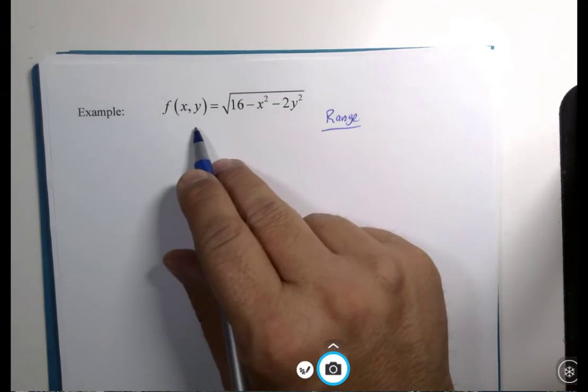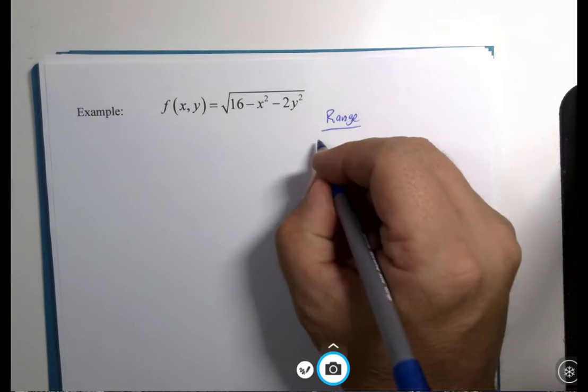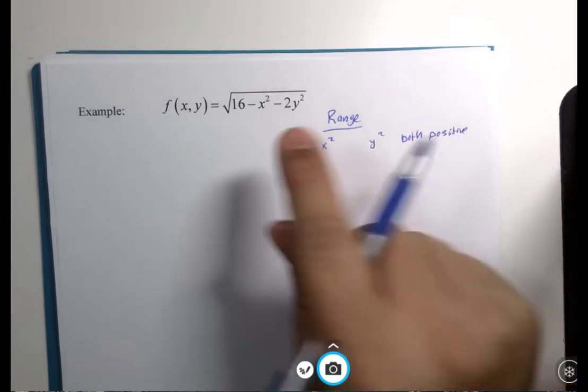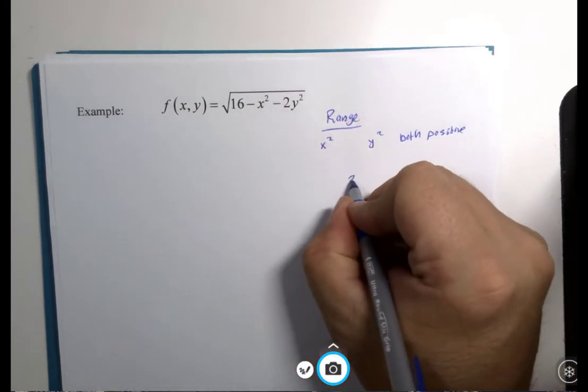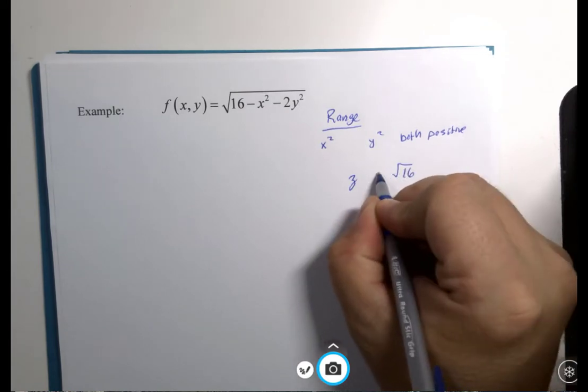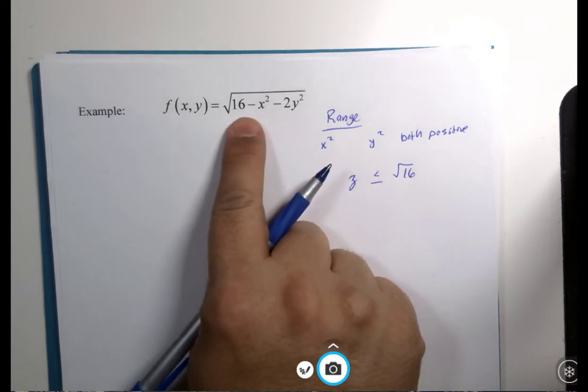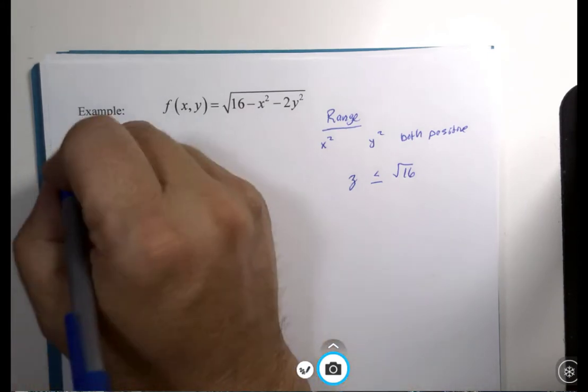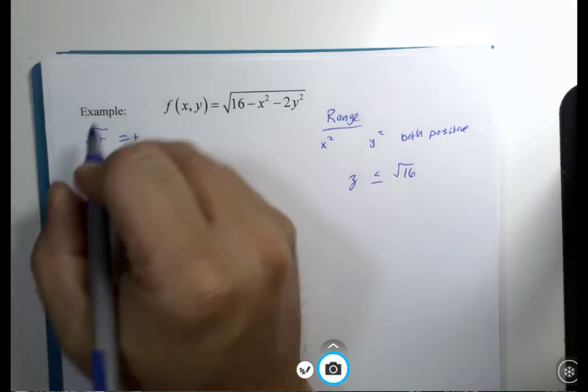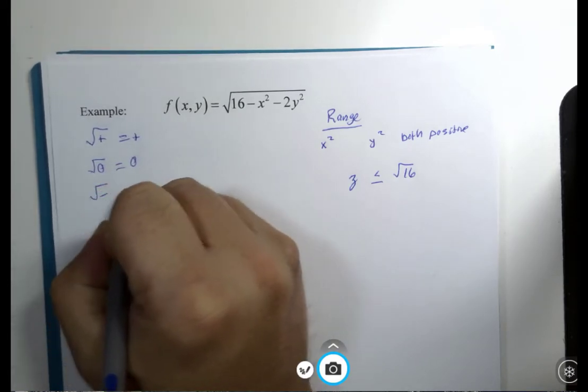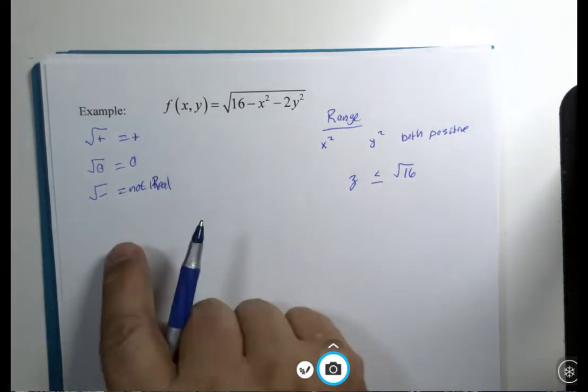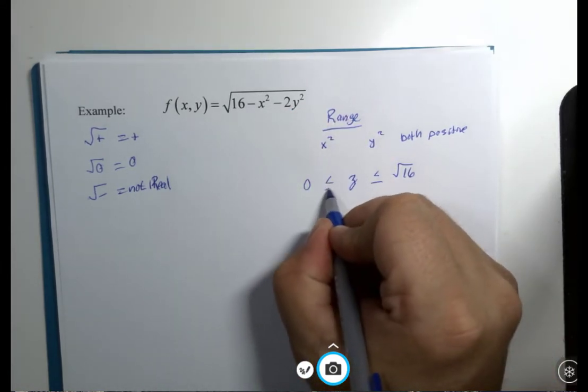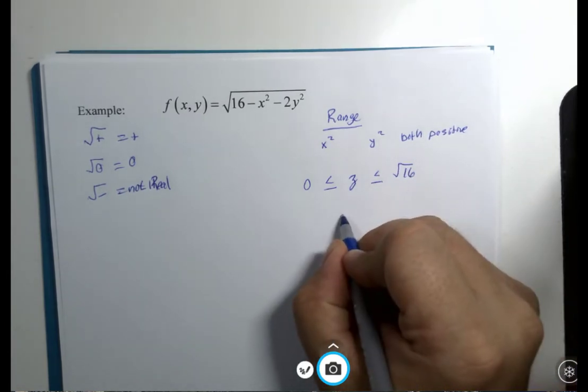Remember, range refers to z values of the outputs. It should be pretty easy to tell from this that if x² and y² are both positive, by subtracting them, the square root of 16 is the biggest possible value we're going to get. It starts at 16 and gets smaller, so the square root of 16, or 4, is as big as it gets. The square root of a positive number is positive, the square root of zero is zero, and the square root of negative is not real. That means there's a lowest value we can get here also, and that is zero. Eventually this thing is going to get down to zero in the root, and this literally becomes our range.